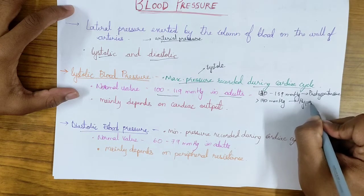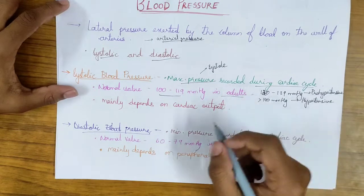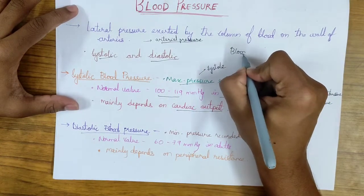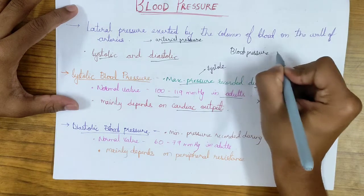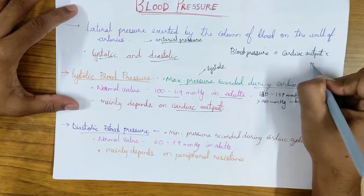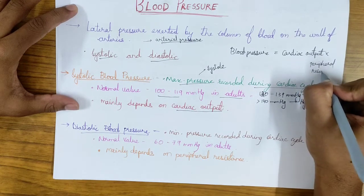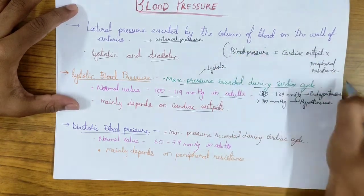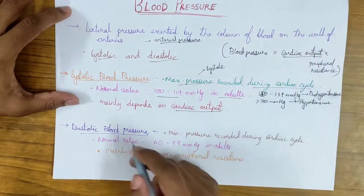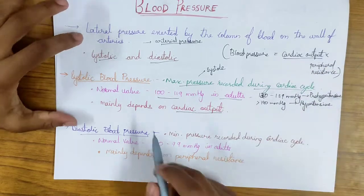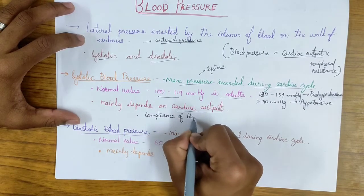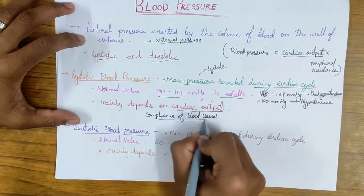Systolic blood pressure mainly depends on the cardiac output. The formula for blood pressure is: Blood Pressure equals Cardiac Output multiplied by Peripheral Resistance. In this formula, the systolic blood pressure mainly depends on the cardiac output component. So systolic blood pressure varies if the cardiac output varies. It also depends on the compliance of the blood vessel — compliance meaning the stretchability of the blood vessel.